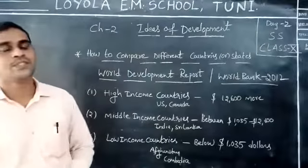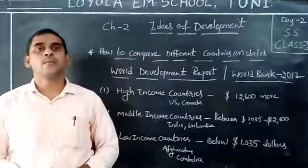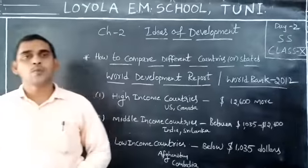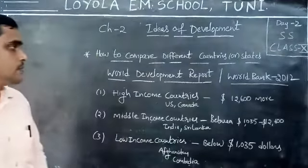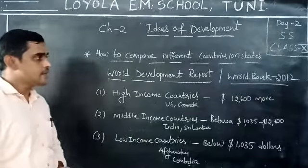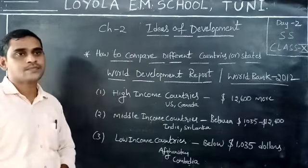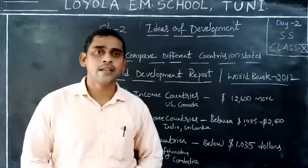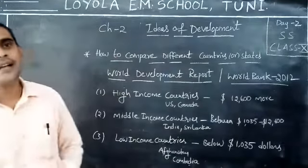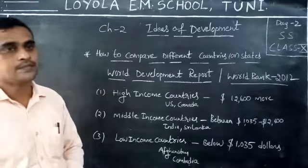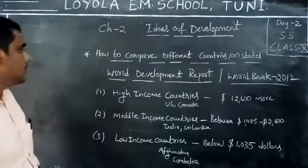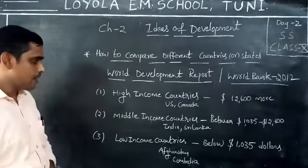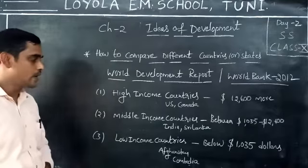According to the World Development Report brought by the World Bank in 2012, the entire countries of the world are divided into three categories on the basis of income. The three categories are: high-income countries, middle-income countries, and low-income countries.